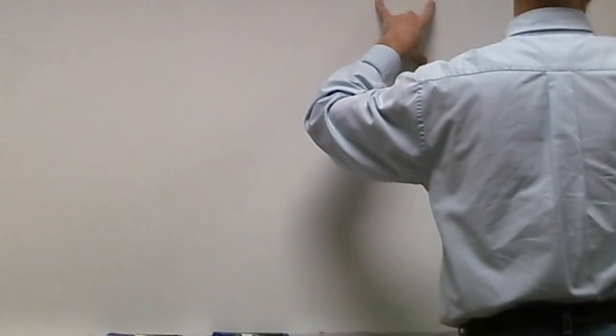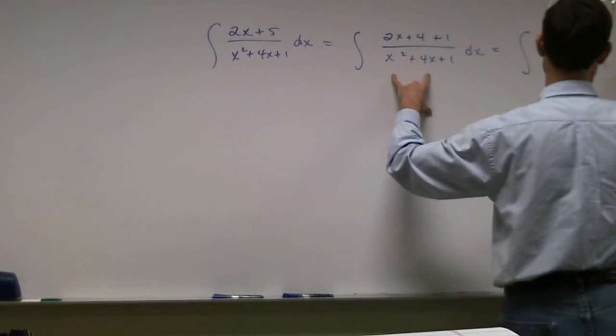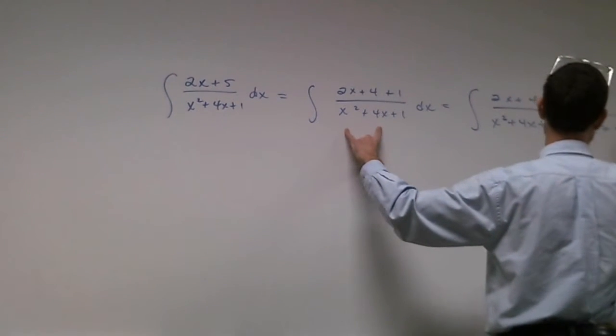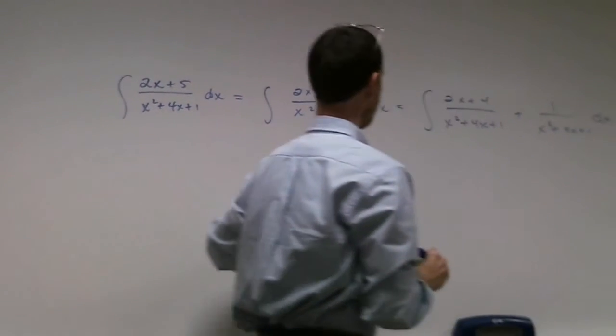1 over x squared plus 4x plus 1, plus 1 over x squared plus 4x plus 1. Am I right?